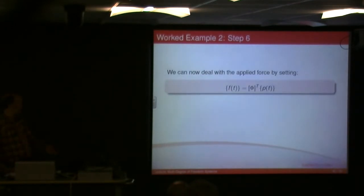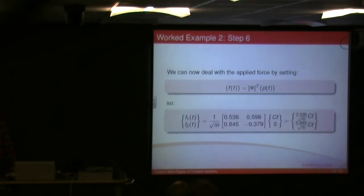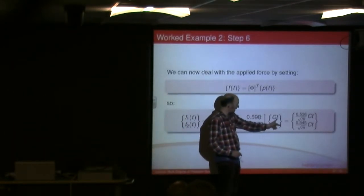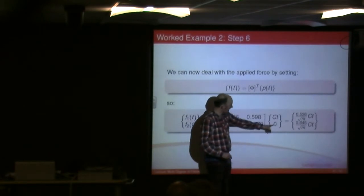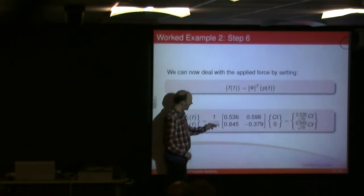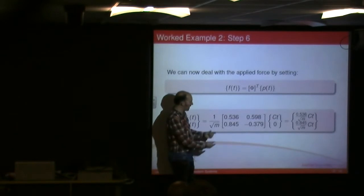Now, dealing with the applied force, I take the modal matrix, I transpose it, and I multiply it by my applied force. And notice what I get. My applied force, the F1, P1 was CT, and P2 was 0, and so I multiply this out. There's my modal matrix, transposed.